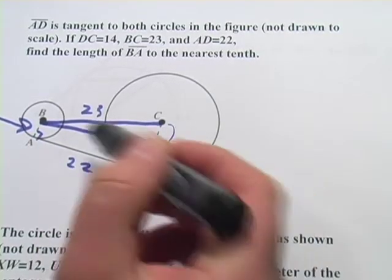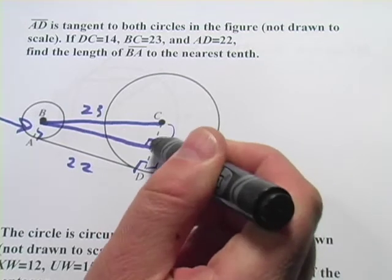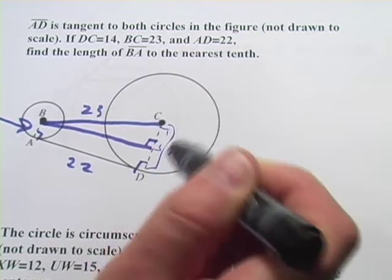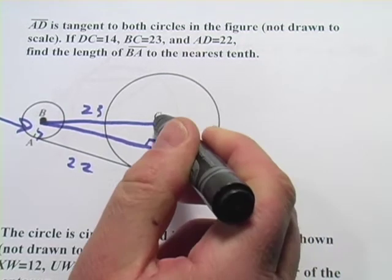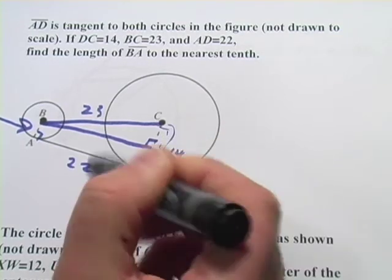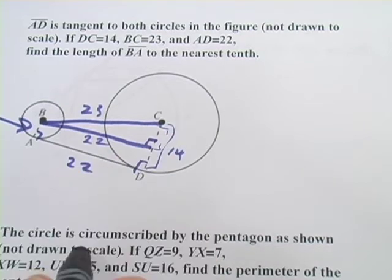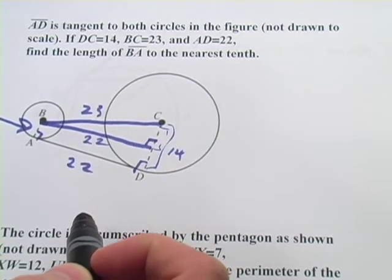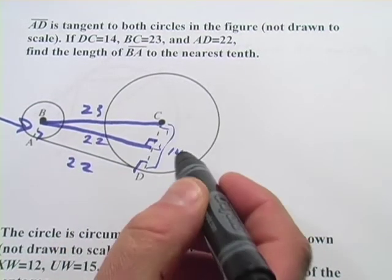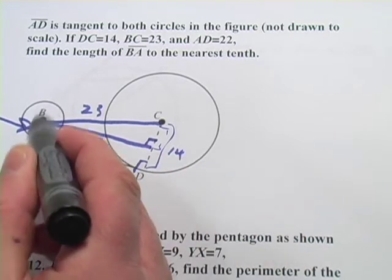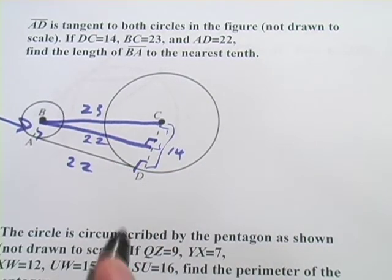And then BA would be 14 minus this chunk right in here. So if we find this chunk in here, which it looks like we can do now because this length is 22, we've got 23 up there and we've got a right triangle. So we could use the Pythagorean theorem to find this side, subtract it from 14 and we've got BA.